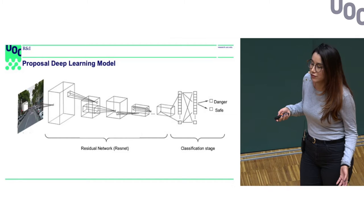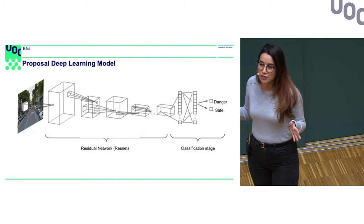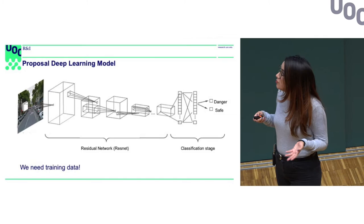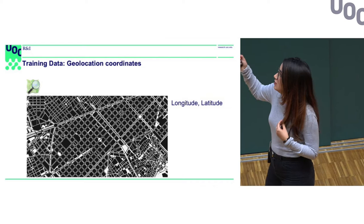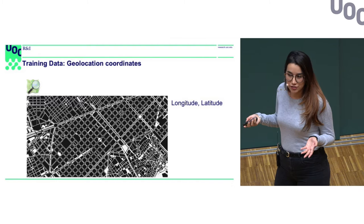Deep learning is a very successful technique that has solved many problems recently. If you are not familiar with it, it's a large computational model with many parameters that needs to be trained on our training data in order to predict an outcome. In our case, we are going to fit this neural network with urban scenes and predict a danger score with regard to pedestrian safety.